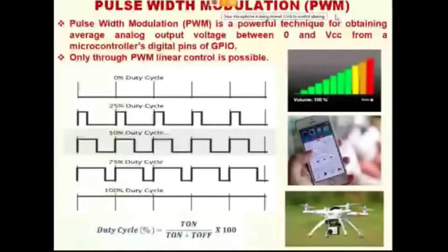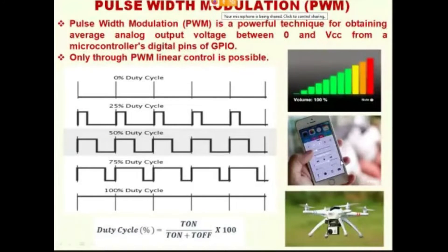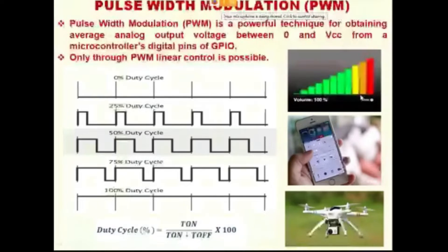All the linear control in the world — whether it is a volume control, a brightness control in a mobile phone, a speed control in a quadcopter, a motor control, or an intensity control — it is happening on and only through pulse width modulation.